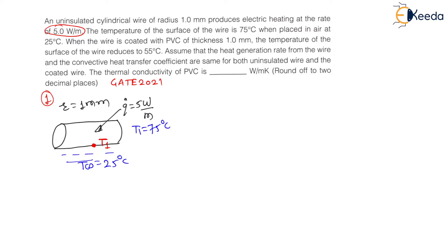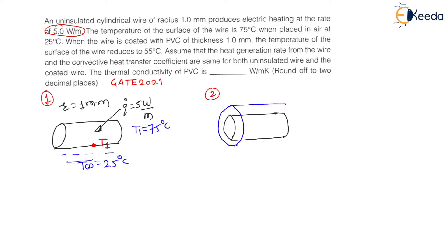In the second condition, the same wire is coated with PVC. On this wire I will provide a coating — meaning it is an insulation. Therefore it will become a coated cylinder. The thickness of this coating is 1 mm. So the inside radius is R1 and the outside radius will be R2, where R2 equals R1 plus thickness, which gives R2 equal to 2 mm.